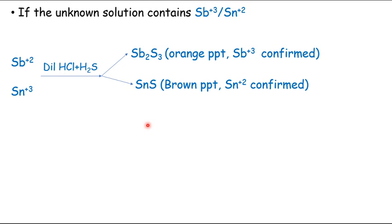This is all about group zero, group one, and group two. In the next lecture we will learn about group three, group four, group five, and group six, which will complete our base cations. Thank you so much. I hope you liked the lecture.